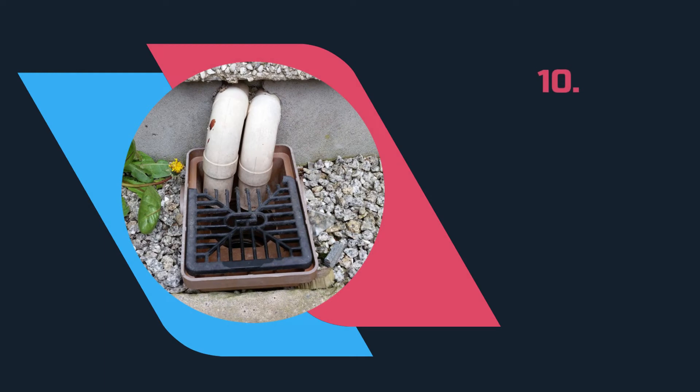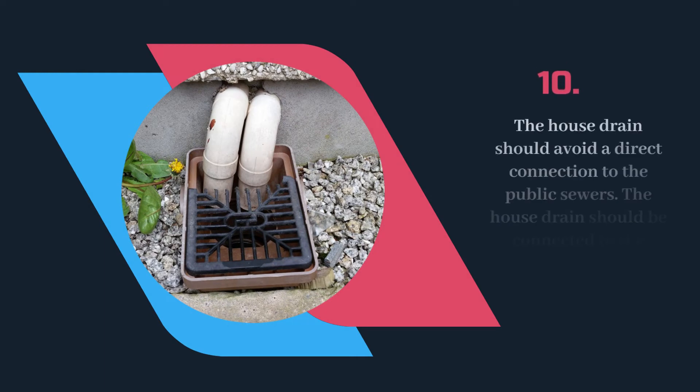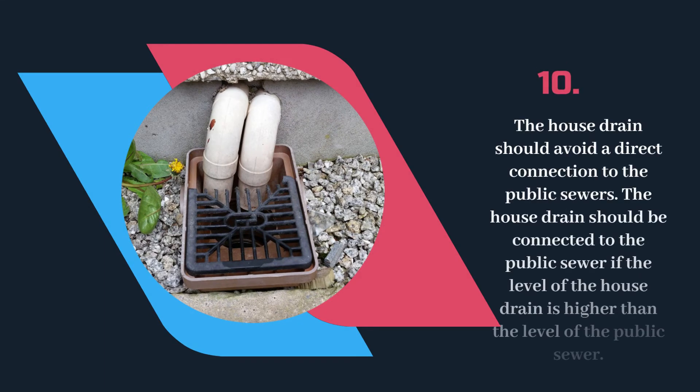The house drain should avoid a direct connection to the public sewers. The house drain should be connected to the public sewer only if the level of the house drain is higher than the level of the public sewer.